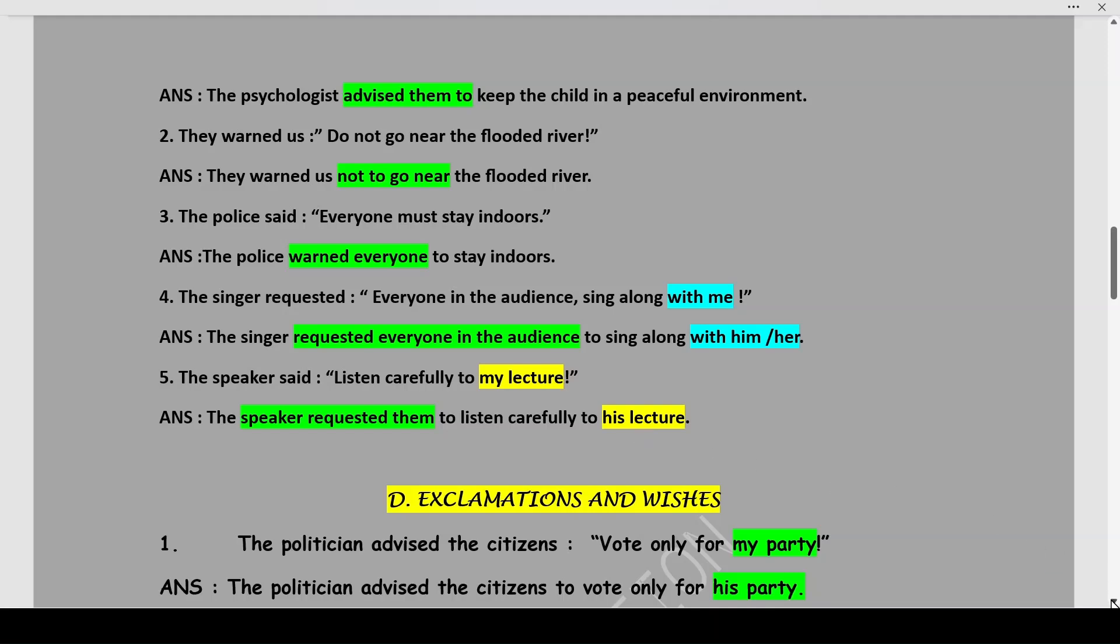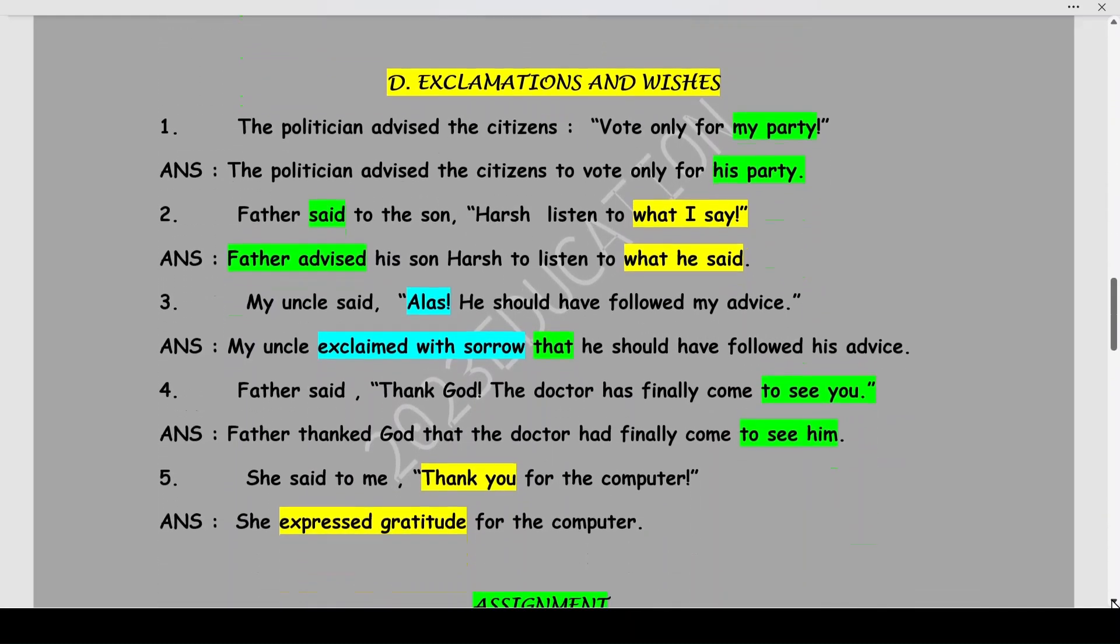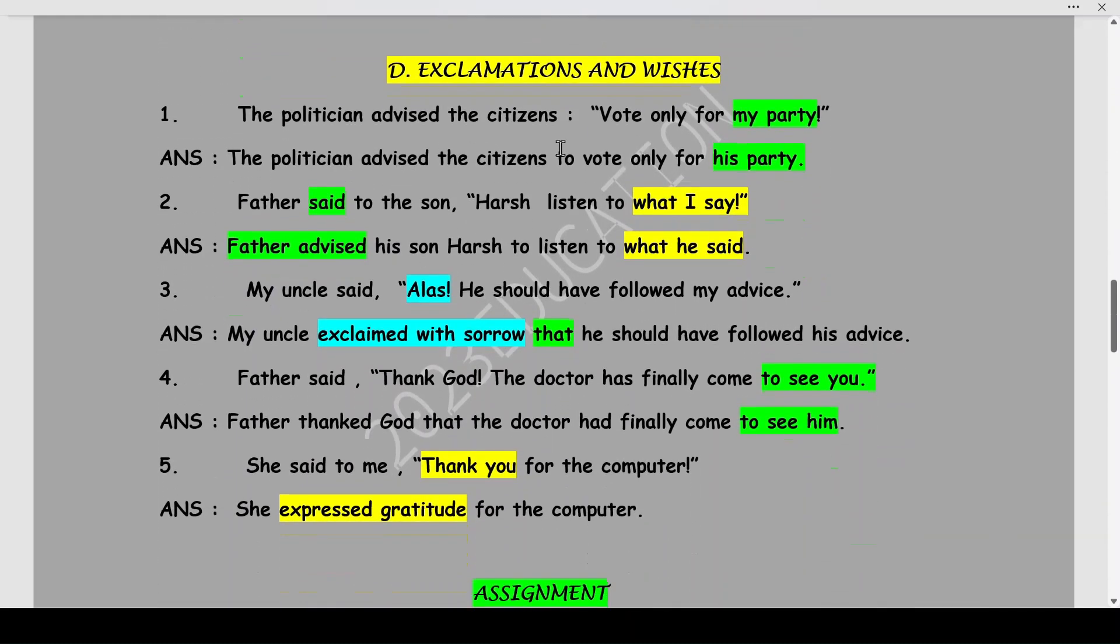Next, the different next type of sentences, exclamation and wishes as we know them to be exclamatory sentences. The politician advised the citizens, vote only for my party. The politician advised the citizens to vote only for his party. Father said to the son, hush, listen to what I say. Now, this is the kind of advice being given. So, we will use father advised his son, hush, to listen to what he said.